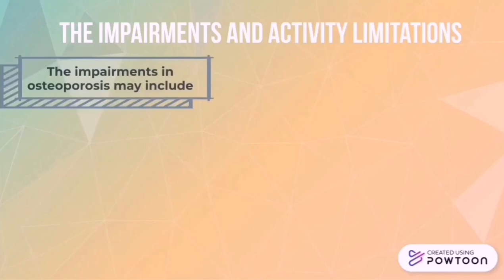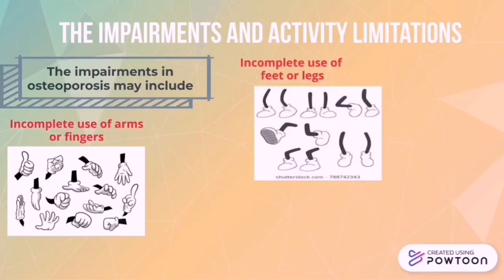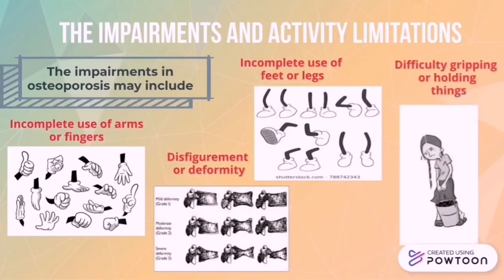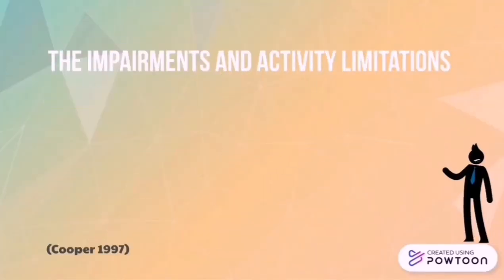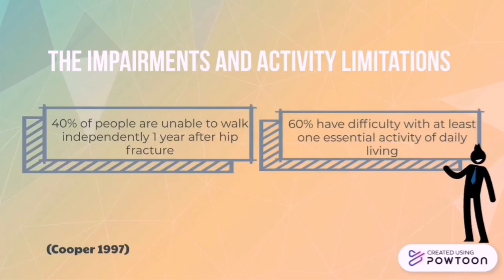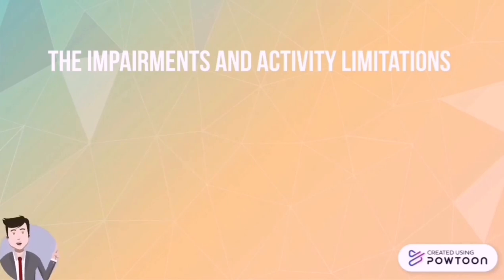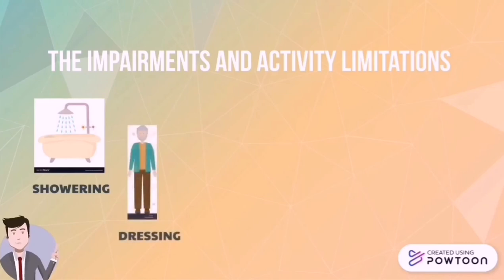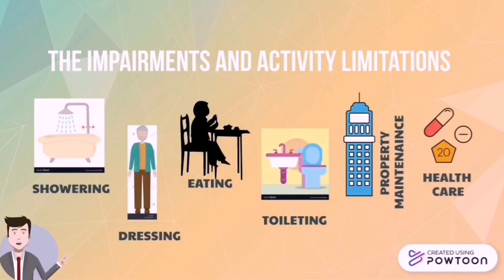Impairment in osteoporosis may include incomplete use of arms or fingers, incomplete use of feet or legs, and difficulty gripping or holding things. Based on Cooper 1997, about 40% of people are unable to walk independently one year after hip fracture, 30% have difficulty with at least one essential activity of daily living, and about 80% are limited in activities such as driving and shopping. People with osteoporosis require significantly more assistance with showering, dressing, eating, toileting, bladder or bowel control, property maintenance, and healthcare.